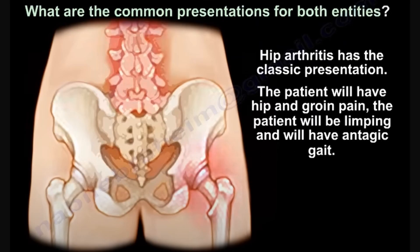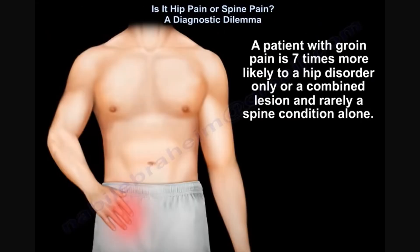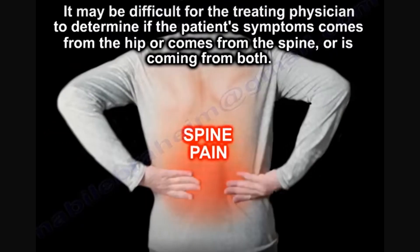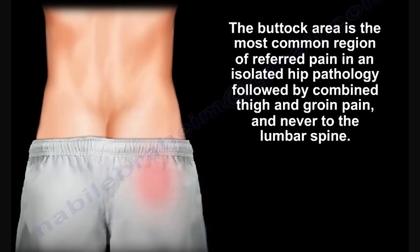Hip arthritis has a classic presentation: the patient will have hip and groin pain, will be limping, and will have an antalgic gait. A patient with groin pain is seven times more likely to have a hip disorder or a combined lesion, but rarely a spine condition alone. It may be difficult for the treating physician to determine if the patient's symptoms come from the hip, the spine, or both. The buttock area is the most common region of referred pain in isolated hip pathology, followed by combined thigh and groin pain, but never referring to the lumbar spine.